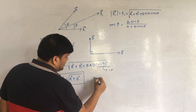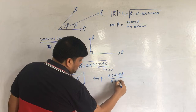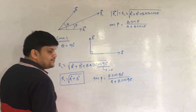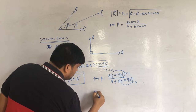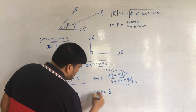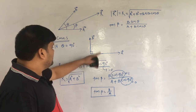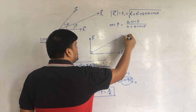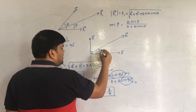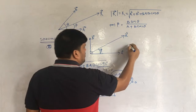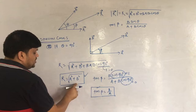For the angle beta when θ = 90°: tan β = B·sin90° / (A + B·cos90°) = B·1 / (A + 0) = B/A. So if two vectors are perpendicular, R = √(A²+B²) and tan β = B/A.